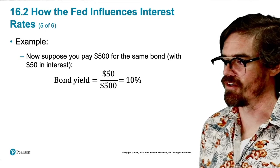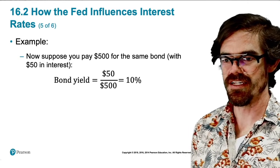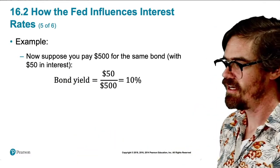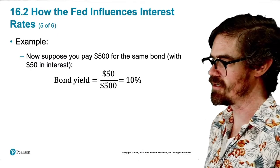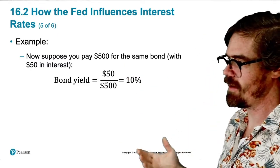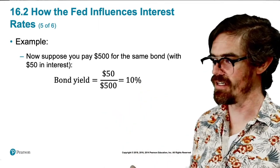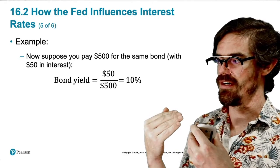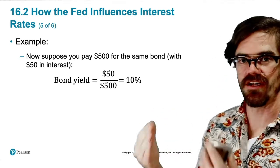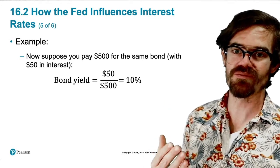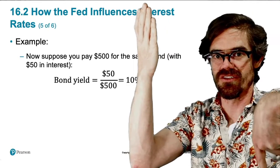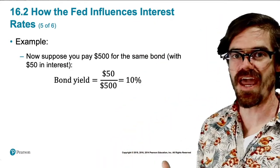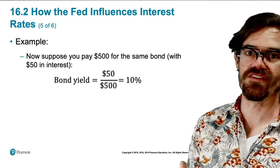Now, suppose you pay $500 for the same bond. The interesting thing about bonds is that the amount they pay you every year doesn't change — the interest it pays is always $50. But the price changes depending on supply and demand conditions in the bond market. In this case, the price has gone down — what happens to the interest rate or the yield? It goes up. So there's an inverse relationship between the price of bonds and the interest rate or the bond yield. They move in opposite directions. So when the Fed buys bonds, it increases prices, which means yields — interest rates — go down. And when it sells bonds, prices go down and interest rates go up. That's how the Fed is able to manipulate interest rates indirectly by buying and selling bonds.